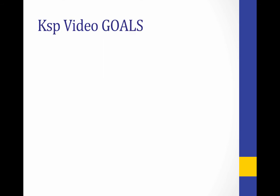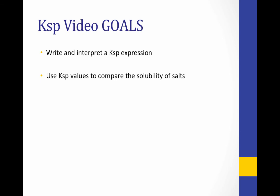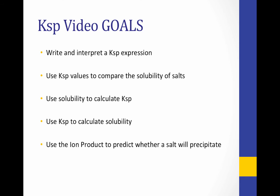That brings us to the end of this video. Let's review our goals. We learned how to write and interpret a KSP expression, then used KSP values to compare the solubility of salts — recall that the highest KSP value corresponds to the most soluble salt. Then we used solubility to calculate KSP, and KSP to calculate solubility. Finally, we looked at how to use the ion product, or the Q value, to predict whether a salt will precipitate.